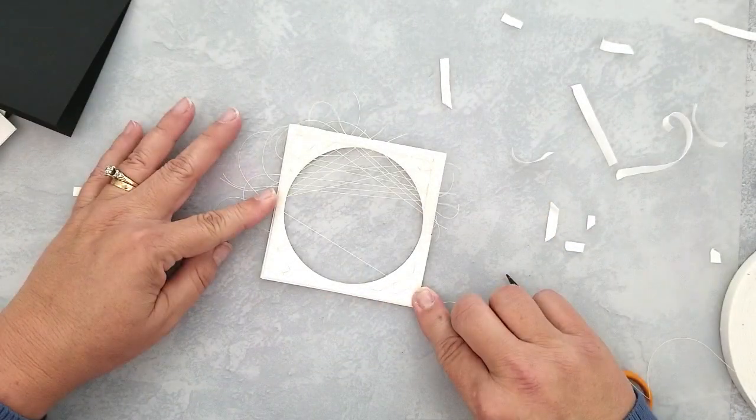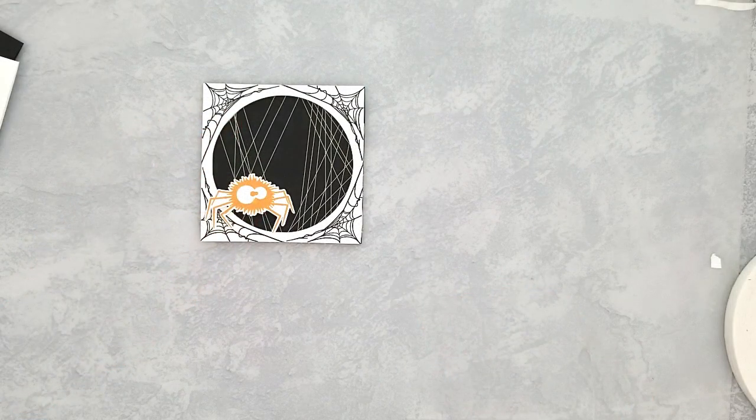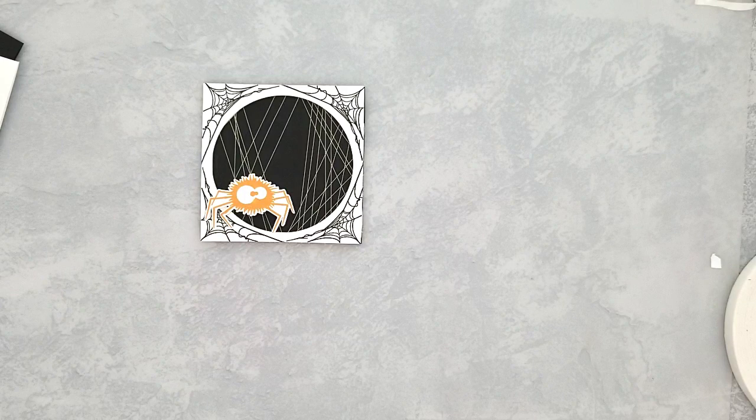Once I have the thread placed, I pull the string tight and then adhere it to black cardstock. I trim the extra thread from around the edges. I'm going to set these aside for now and start assembling the shaker cards.